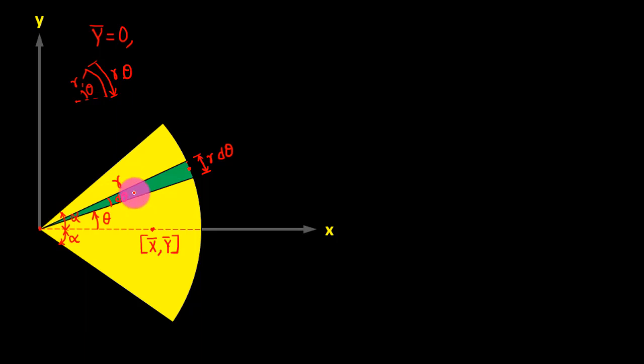This strip is going to have its own centroid somewhere here, and that centroid is going to have its own x and y coordinate. Let's say small x with a tilde at the top, small y with a tilde at the top. So this is precisely the centroid of this small triangular strip.